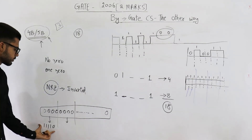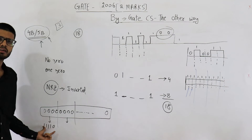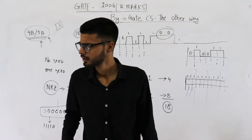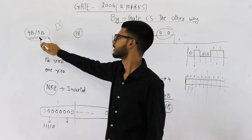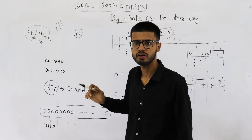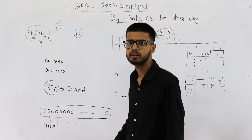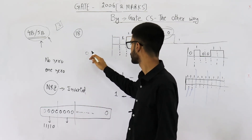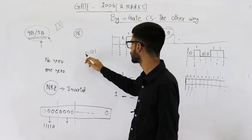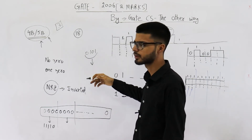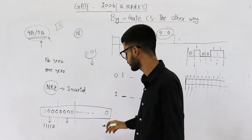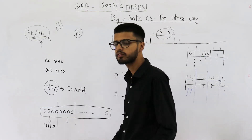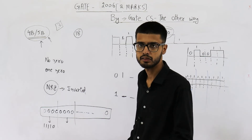Something like all zeros will be encoded into a specific pattern. You can search the 4b/5b encoding table online — there is a one-to-one mapping for all the patterns. For example, if 4 bits are 0,1,0,1, you can look up the corresponding 5-bit pattern. The key point is you won't have more than 3 continuous zeros.